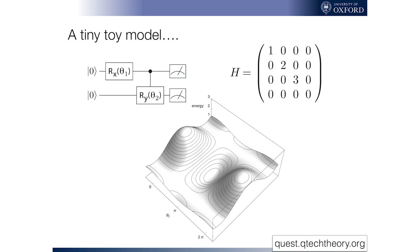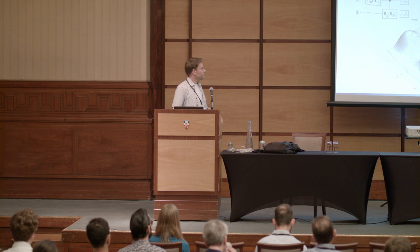This is the energy landscape that we get as a function of those two parameters, and right in the middle, which is at the value both parameters are set to pi, we see there is the minimum that we would like to get to. So it's easy to intuitively see what's happening. We're just flipping the first qubit full force and then applying this controlled y rotation full force to get from 0, 0 to 1, 1.